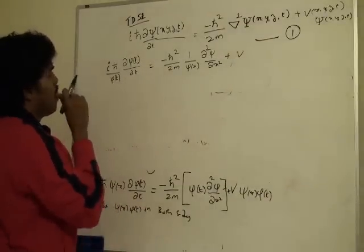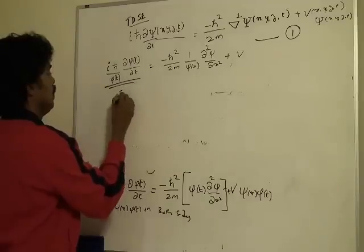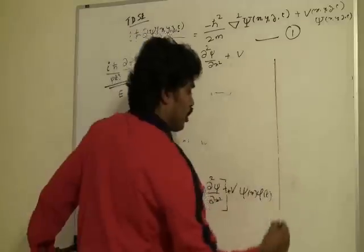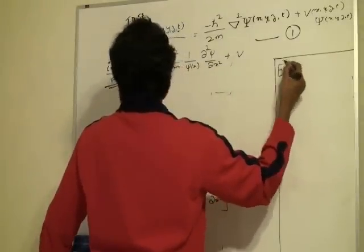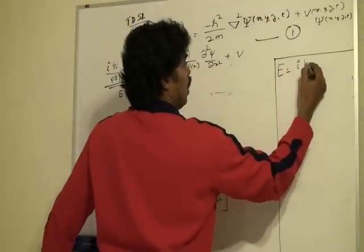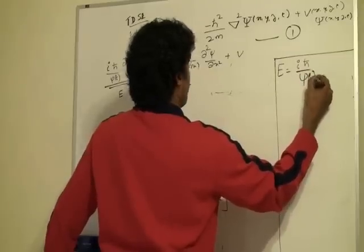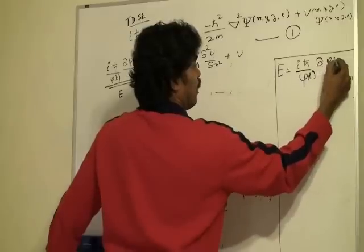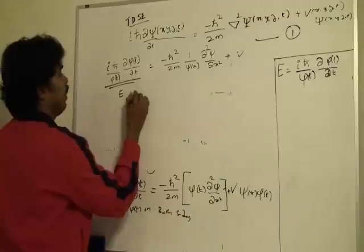So we can replace this by E. But we need this, so I am going to write it down here. E is equal to, again it is a constant, i ℏ/φ of t ∂φ of t by ∂t. So this is E.